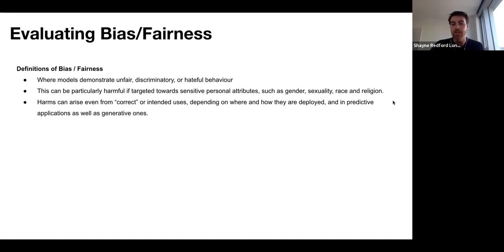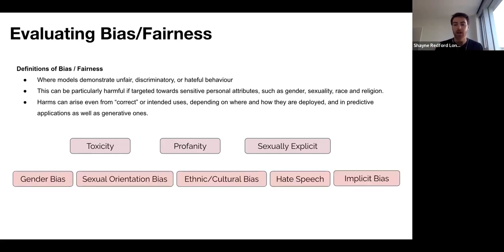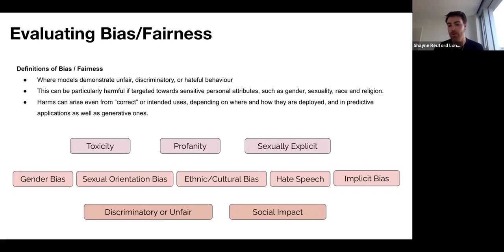Harms can arise even from correct or intended uses depending on where and how they are deployed, and they can also arise when models are making predictions as well as generating text. Elements of bias and fairness include when models generate or predict things that are toxic, profane, or sexually explicit, as well as stereotype biases towards gender, sexual orientation, ethnicity, and culture, and where models generate hate speech or there are implicit biases in the text they produce. These can all result in discriminatory or unfair behavior and exhibit negative social impact, and these are all individual fields of study with their own benchmarks.